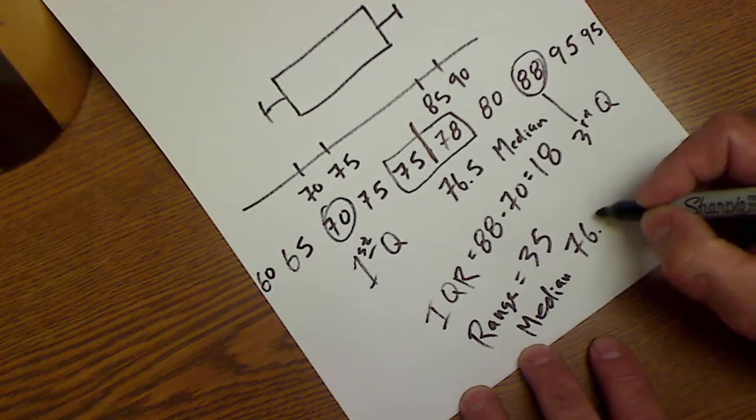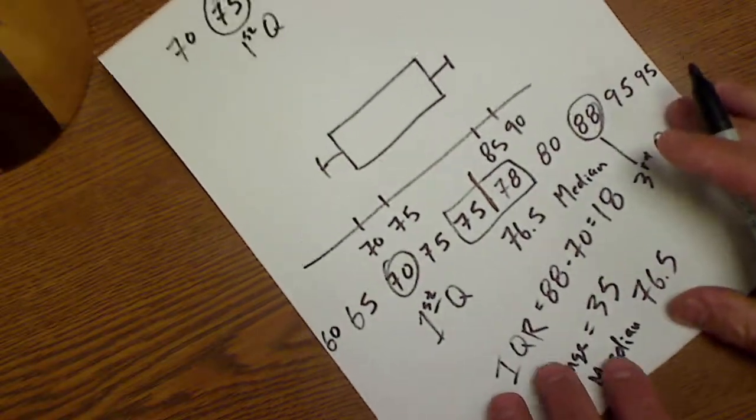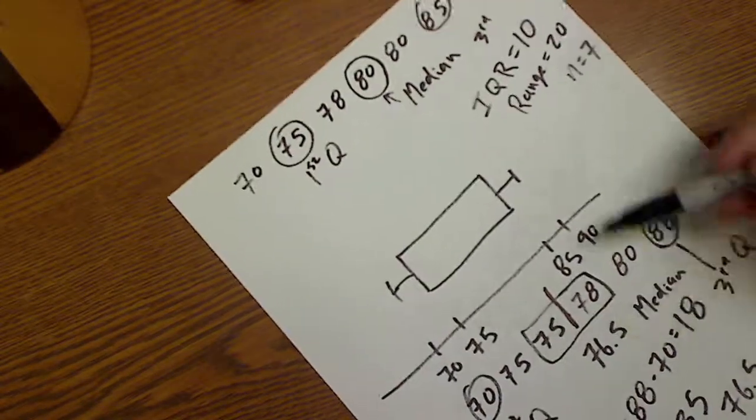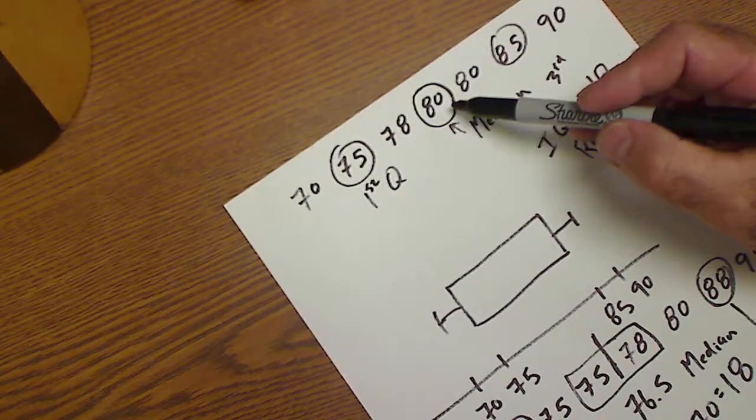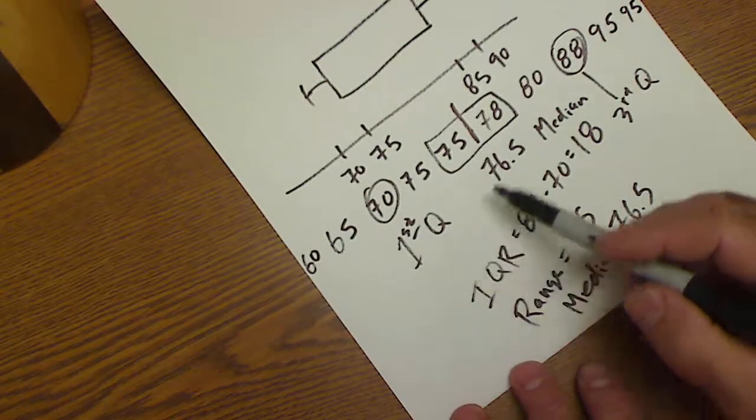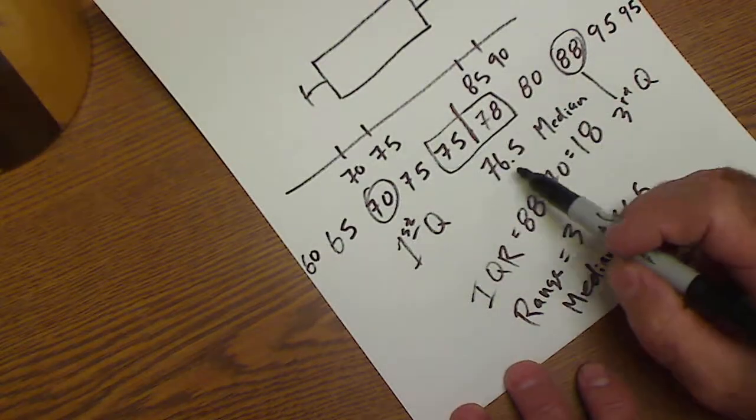Okay, well hopefully that'll help with the box plot, interquartile range, overall range, and median. Again, if you have an odd number of values, the middle value is your median. If you have an even number of values, then you take the two middle values and you average them.